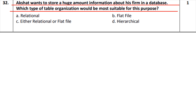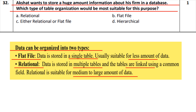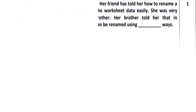Last question, question number 32: Akshat wants to store a huge amount of information in his database. There are different types of databases — flat file database and relational database. A flat file database stores data in a single table and is chosen when there is a small amount of data. A relational database is used when there is a large amount of data, as it uses multiple tables linked through a common field. So if we store a lot of data, we choose a relational database.